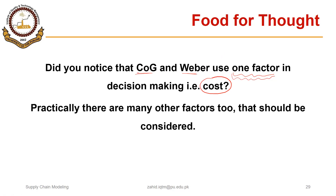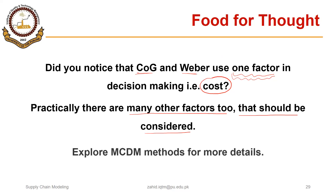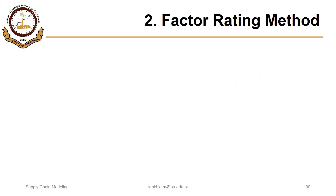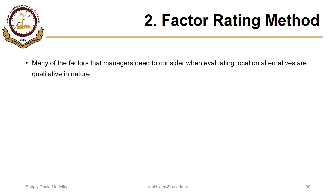We assumed that transportation cost is directly proportional to the product of distance. However, there are many other factors that are also important to consider. So we will see two methods in which we can consider more than one factor. These methods as a whole are called multi-criteria decision making tools, or MCDM tools. One that we will use is the Factor Rating Method.